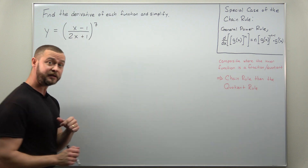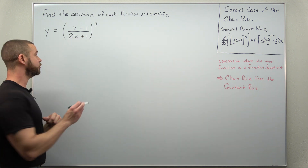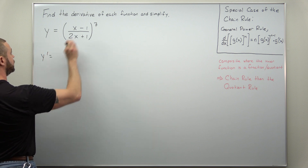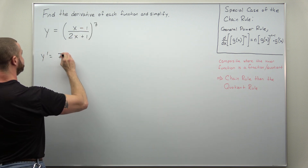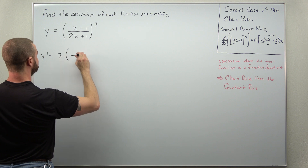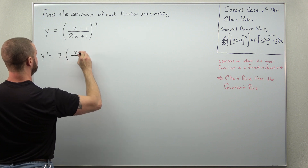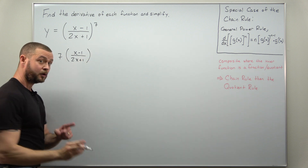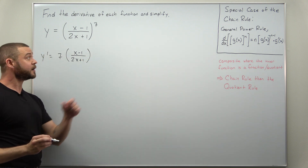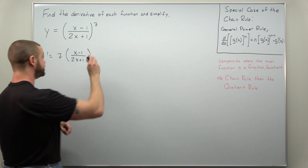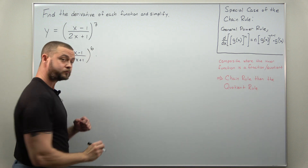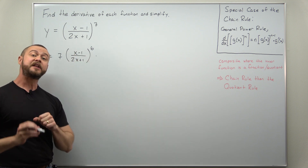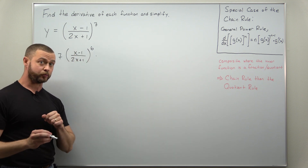So let's go ahead and start by implementing the general power rule. To calculate y prime, first we bring down our power of 7, keep the inside the same — x minus 1 divided by 2x plus 1 — subtract one from the power so the outer power is now 6, and then we multiply by the derivative of the inside, which is where we apply the quotient rule.